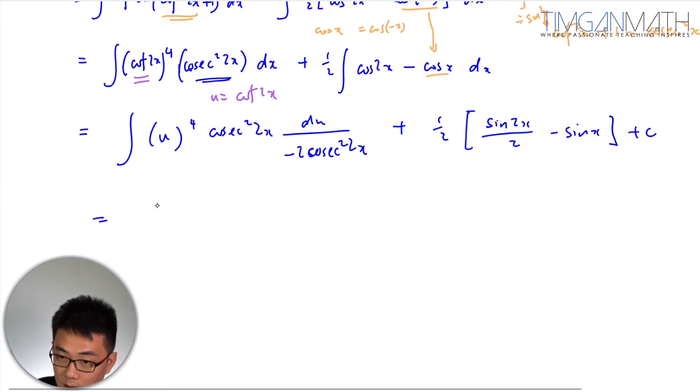Du will be negative 2 cosecant squared 2x. Cancel it out this will be half sine 2x over 2 minus sine x plus c.